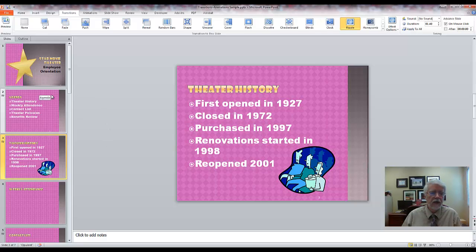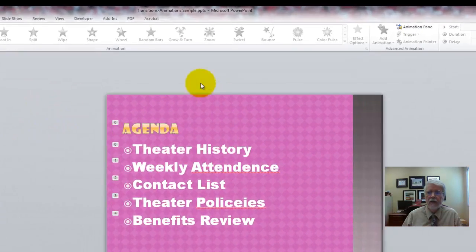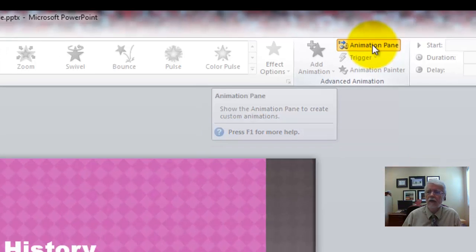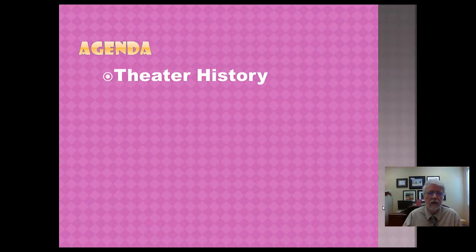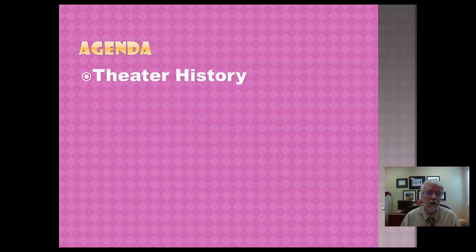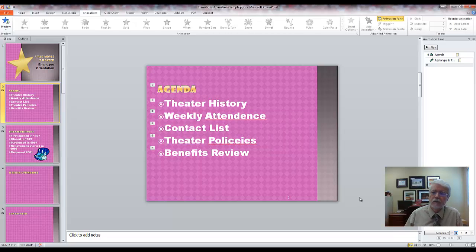Now animations — you can get a lot more complex here. You click on the Animations tab up here, and it's helpful to click Animation Pane, which opens a window that lists all the things that are going to happen. If we preview this slide, you can see the transition, then a point comes in automatically, then you click and the next one comes in from the side, and so on. Each of these is happening on a click.